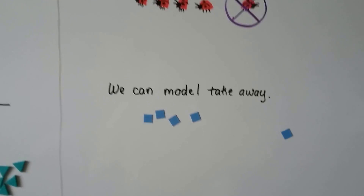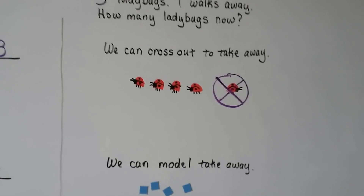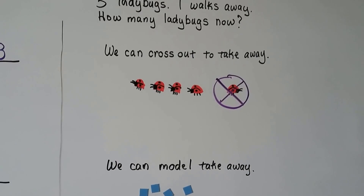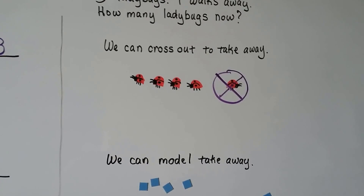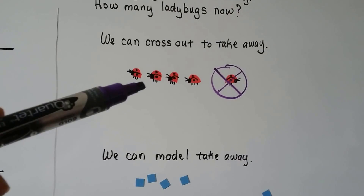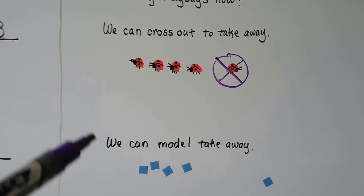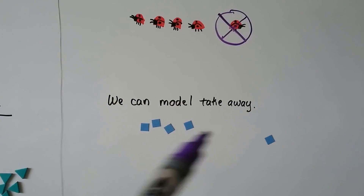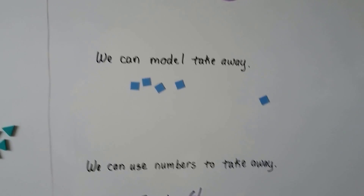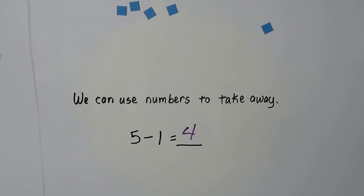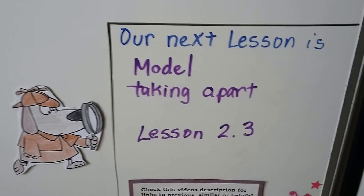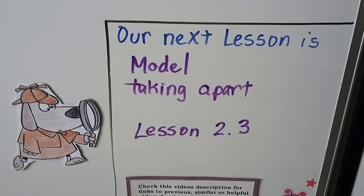So there are different ways we can use to help us do take away — subtraction. We can use pictures and cross out what we're taking away. We can use models and move away what's being taken away. Or we can use numbers to do take away. Our next lesson is model taking apart, Lesson 2.3. We're going to take apart numbers to help us do subtraction and take away.